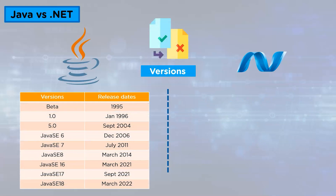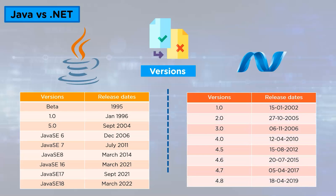Versions: In Java, the first beta version was released in 1995, version 1.0 was released in January 1996, and so on. The most recent version was Java SE 16 released in March 2021, followed by Java SE 17 released in September 2021, with Java SE 18 expected in March 2022. In .NET, the first version 1.0 was released on 15 January 2002, and the most recent version is 4.8 released on 18 April 2019.